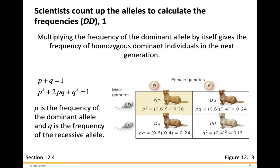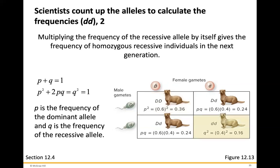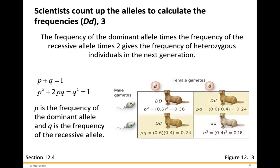Multiplying the frequency of the dominant allele by itself gives the frequency of homozygous dominant individuals in the next generation. Multiplying the frequency of the recessive allele by itself gives the frequency of homozygous recessive individuals. The frequency of the dominant allele times the frequency of the recessive allele times 2 gives the frequency of heterozygous individuals. Heterozygous means you have one dominant and one recessive; homozygous means having both dominant or both recessive.